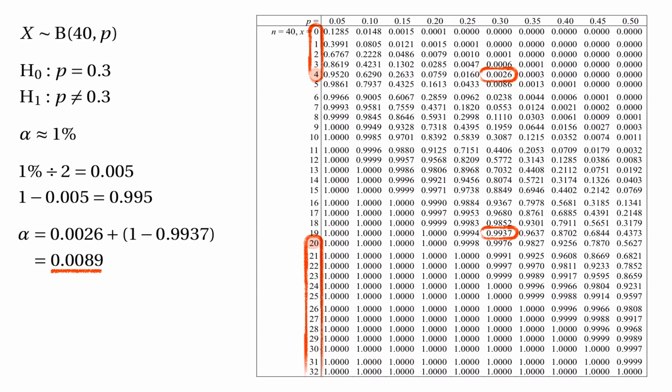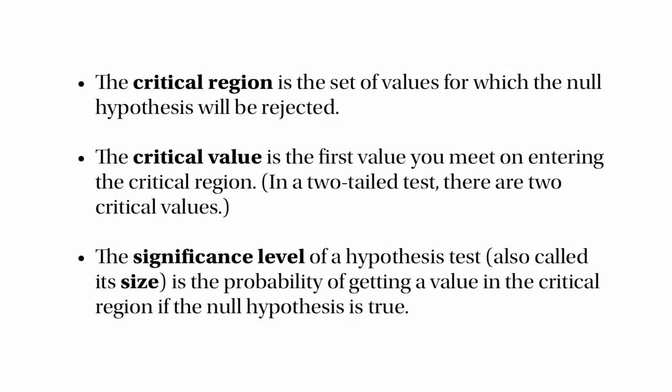That's pretty much the end of this video about finding the critical region for a hypothesis test. Here are the definitions to remember: the critical region is the set of values for which the null hypothesis will be rejected; the critical value is the first value you meet on entering the critical region, and in a two-tail test there'll be two critical values; and the significance level — also called the size of the hypothesis test — is the probability of getting a value inside the critical region if the null hypothesis is true. The significance level can be puzzling because sometimes we aim for 5% or 10% but the actual significance level turns out to be something slightly different, like 4.2%.